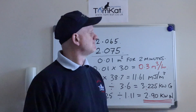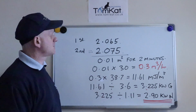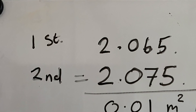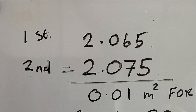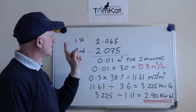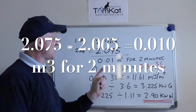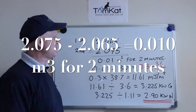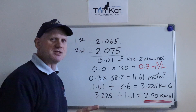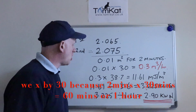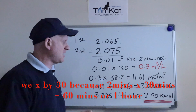On the board now you can see our first figure was 2.065. Our second figure after we timed for two minutes was 2.075. So if we take 2.075 minus 2.065 we get 0.01 meters cubed — but that's only for two minutes.